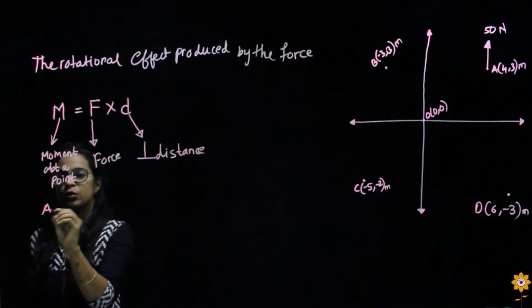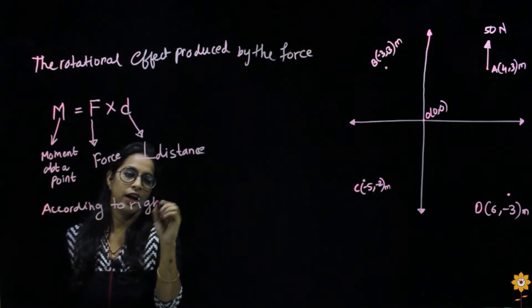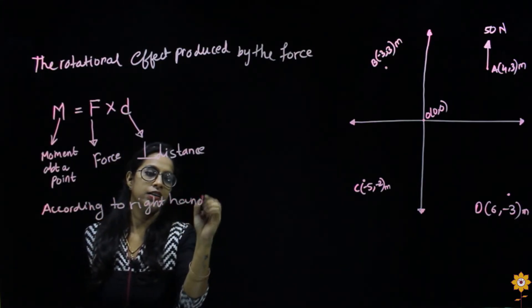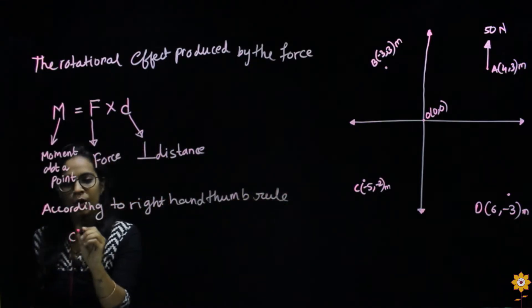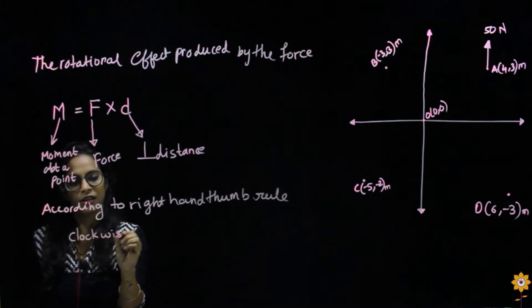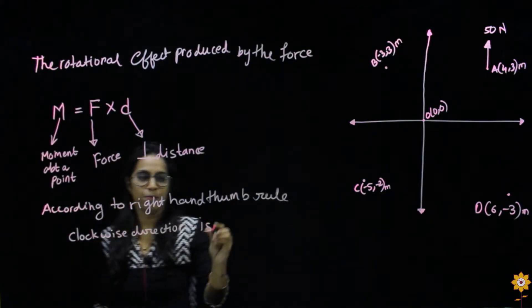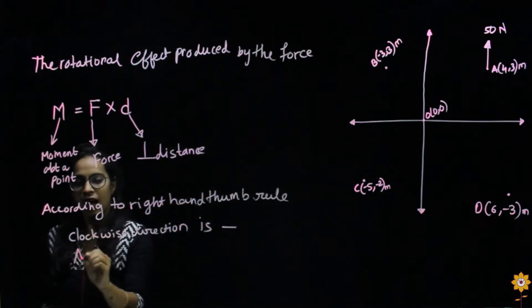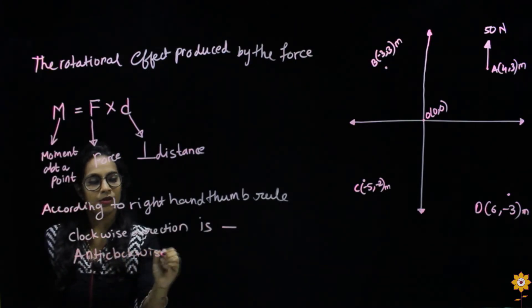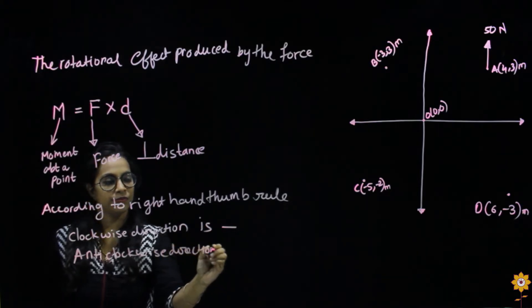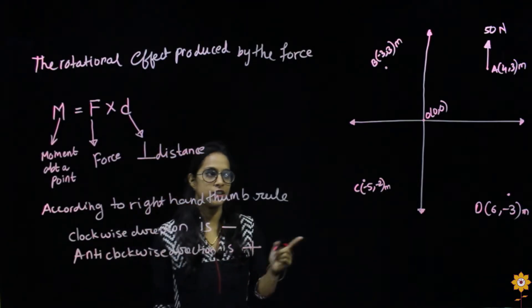So according to the right-hand thumb rule, clockwise direction is taken as negative and anticlockwise direction is taken as positive. These are the two sign conventions that we need to apply.